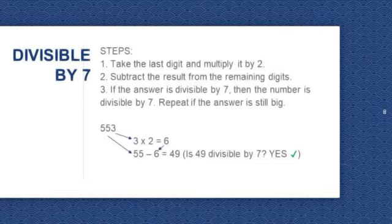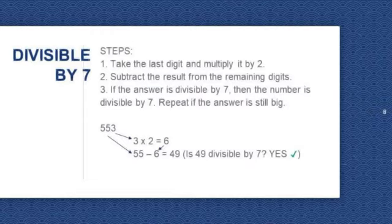Divisible by 7. There are a series of steps to determine whether a number is divisible by 7. Step 1: take the last digit and multiply it by 2. Step 2: subtract the result from the remaining digits. Step 3: if the answer is divisible by 7, then the number is divisible by 7. Repeat if the answer is still big.